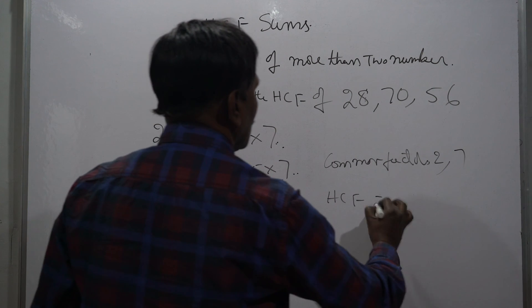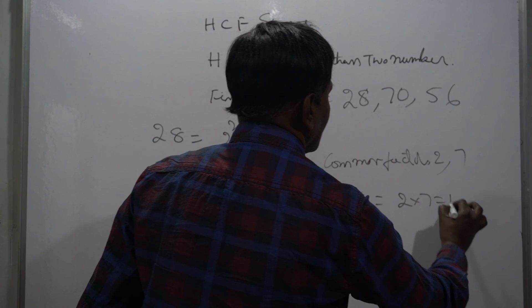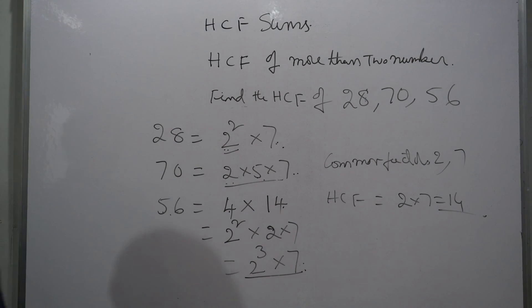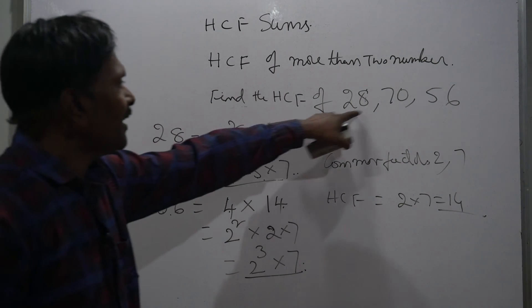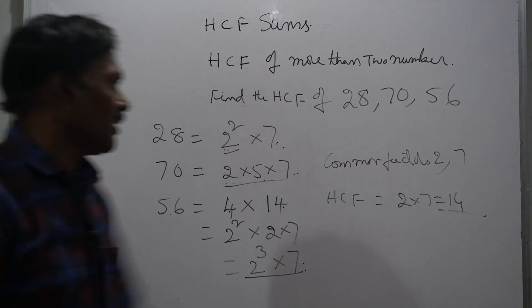HCF is equal to 2 into 7, that is equal to 14. So the HCF of 28, 70, and 56 is 14.